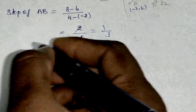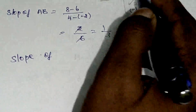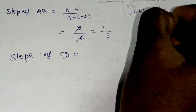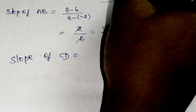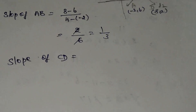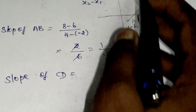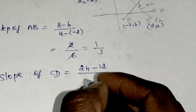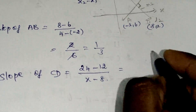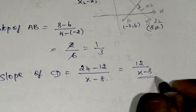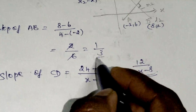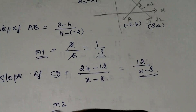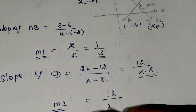Now the slope of Line 2: the points are 8 comma 12 and x comma 24. So x1 is 8, y1 is 12, x2 is x, y2 is 24. The slope is y2 minus y1 divided by x2 minus x1, which gives 24 minus 12 divided by x minus 8, that is 12 by x minus 8. So m2 is equal to 12 divided by x minus 8.